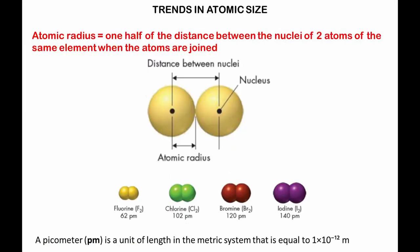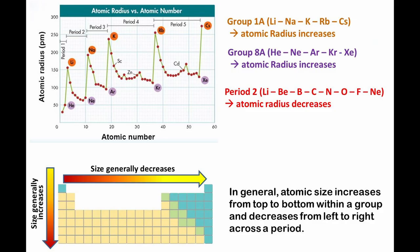How does the atomic size vary in a period? Let's have a look at the atomic radius, which is defined as one half of the distance between the nuclei of two atoms of the same element when the atoms are joined. The unit of length used for the atomic radius is the picometer, which is a metric unit. In the figure above, the atomic radius is plotted as function of the atomic number. Clearly, a periodic trend can be observed. Atomic size decreases from left to right across a period.